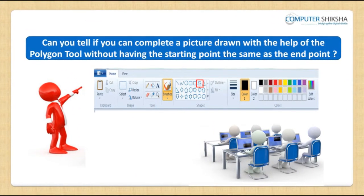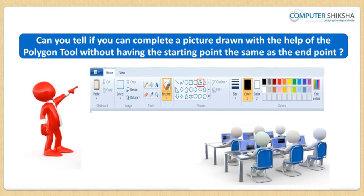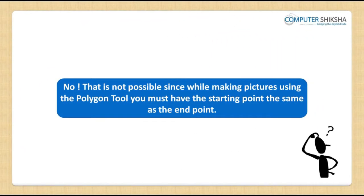Can you tell whether you can complete any picture drawn with the Polygon Tool without having the starting point the same as the end point? No, that is not possible, since while making pictures using the Polygon Tool you must have the starting point the same as the end point.